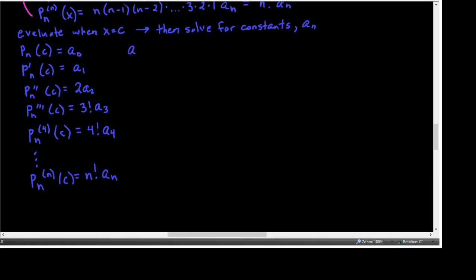Solving for the constants: A sub 0 equals P sub N of C, which we set equal to F of C. A sub 1 equals P sub N prime of C, which we set equal to F prime of C. For A sub 2, we need to divide both sides by 2, so A sub 2 equals one half times the second derivative of F at C, or equivalently F double prime of C over 2 factorial.